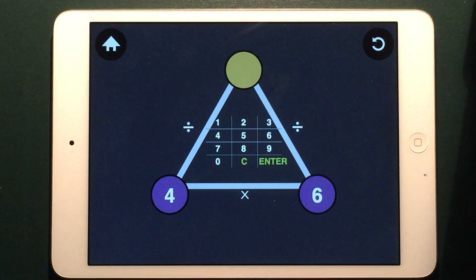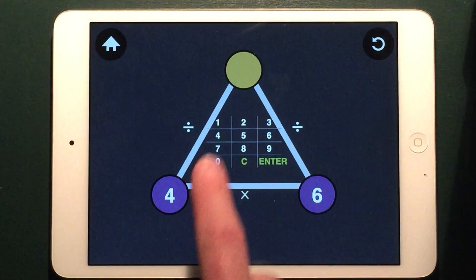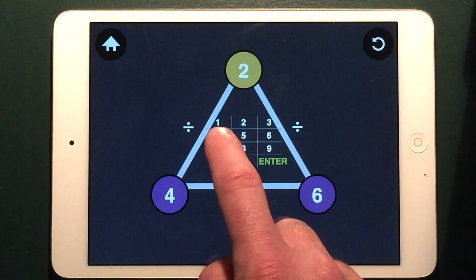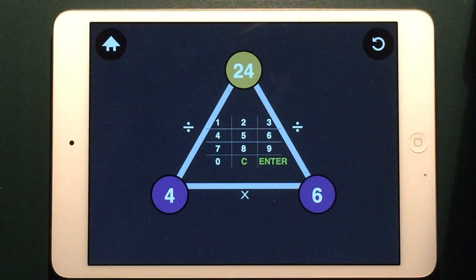To complete this Math Mountain correctly, I need to enter a number in the top. That is the answer I get when I take 4 times 6. If I've done it correctly, the circles will turn green.